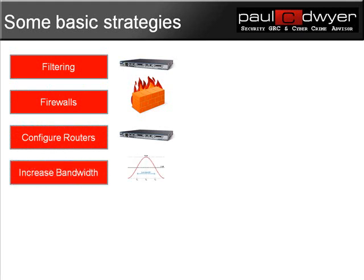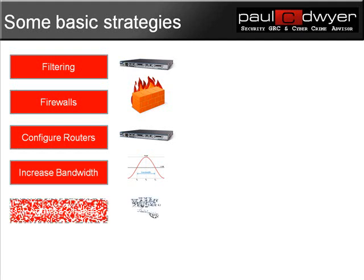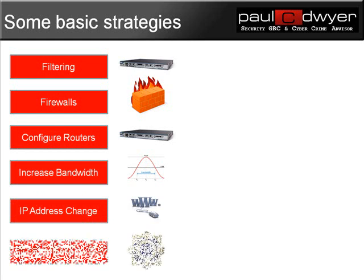Some people opt with increasing bandwidth. This, again, is a very temporary solution, as it's very easy for the attacker to adapt and, for example, increase the size of their botnet that's attacking you with. So it's only a very temporary solution. There's also a lot of people that go along the lines of changing IP addresses. However, the reality is most attacks target domain names as opposed to IP addresses, so this isn't the silver bullet that people would like to think that it is.